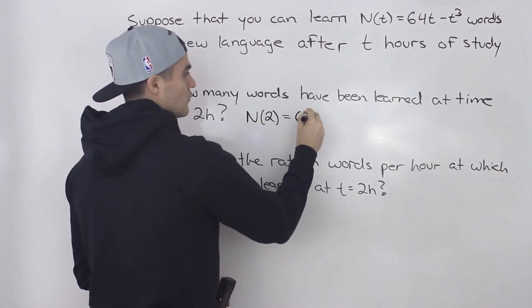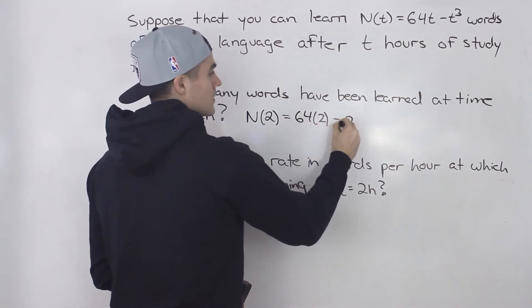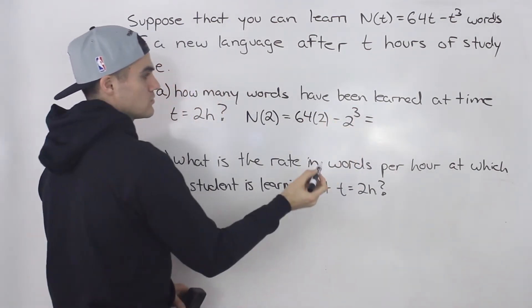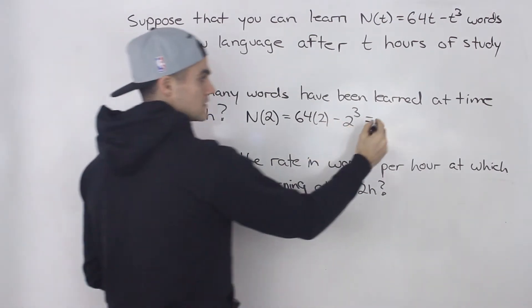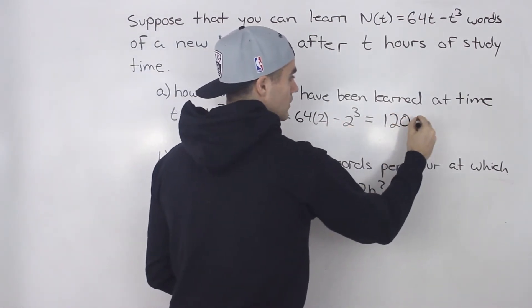So you'd have 64 times two minus two cubed. And when you do that, 64 times two is 128 minus eight gives us 120 words.